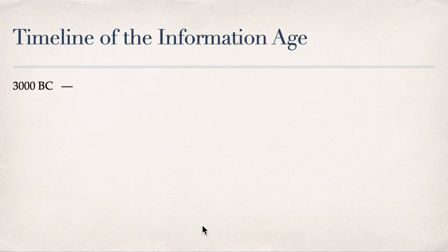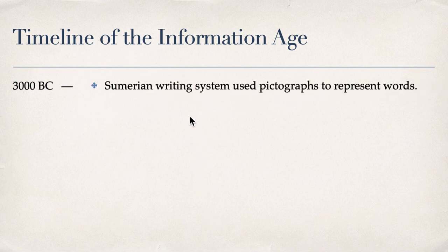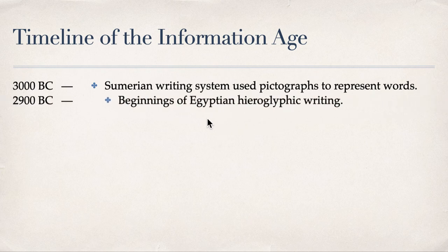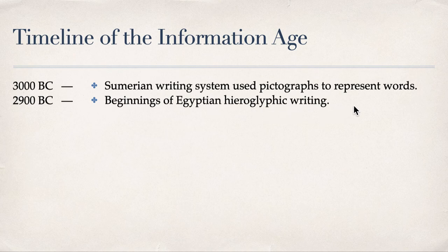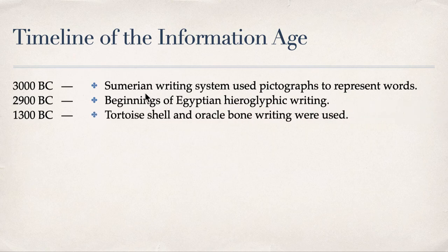In 3000 BC, the Sumerian writing system using pictographs was used to represent words. Around 2900 BC, the beginnings of Egyptian hieroglyphic writing started. In 1300 BC, tortoise shell and oracle bone writing were used for writing.